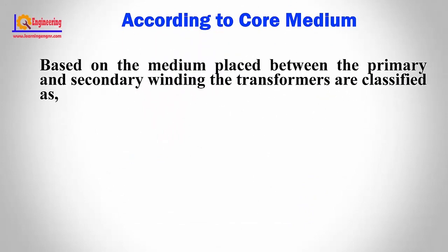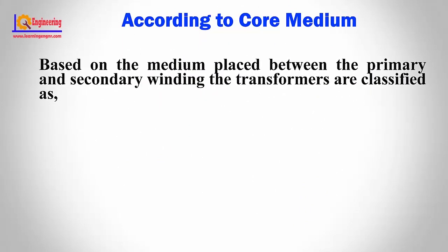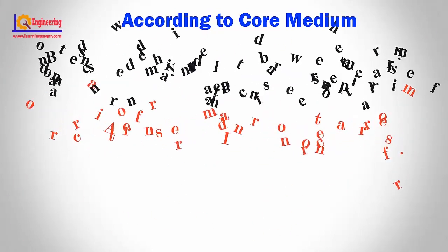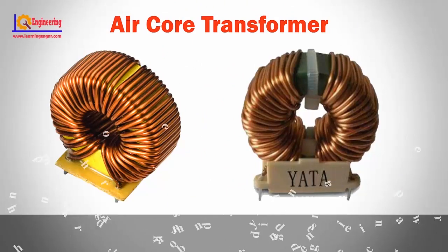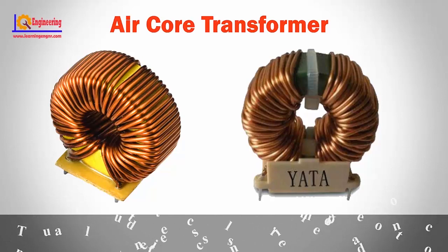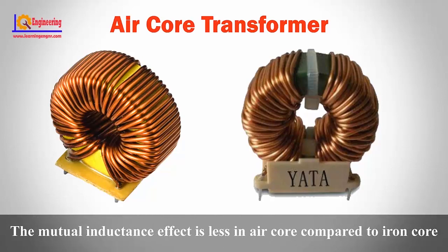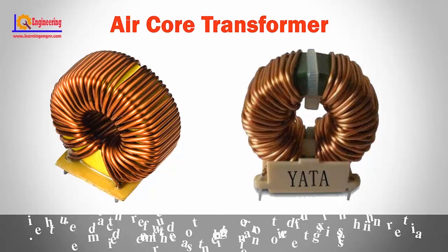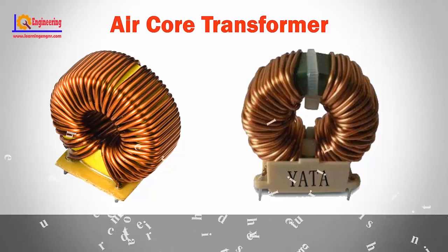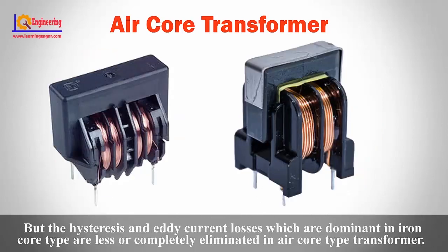According to core medium, based on the medium placed between the primary and secondary windings, transformers are classified as air core transformer and iron core transformer. In an air core transformer, the primary and secondary windings are wound on a non-magnetic strip where the flux linkage between primary and secondary is through the air. The mutual inductance effect is less in air core compared to iron core, and the reluctance offered to the generated flux is high. However, hysteresis and eddy current losses, which are dominant in iron core types, are less or completely eliminated in air core transformers.